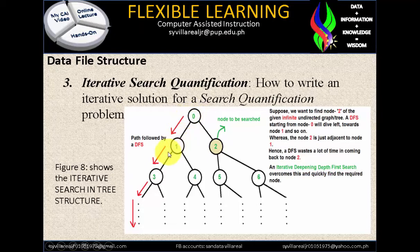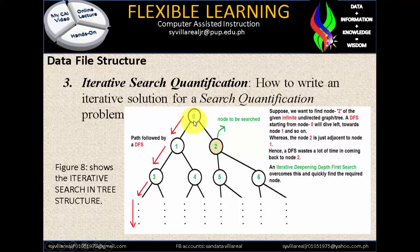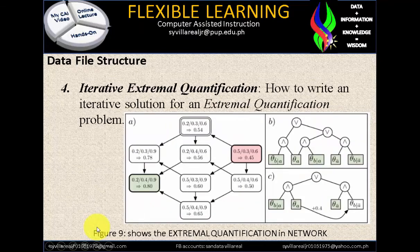They are going to search for number 2 using a tree structure. The first search goes directly to the first tree which has plenty of subfolders: hard drive 0, subfolders 1 and 2, and subfolder of 1 is 3 and 4. Next, we have number 4 — iterative extremal quantification: how to write an iterative solution for an extremal quantification problem.